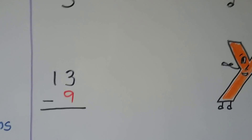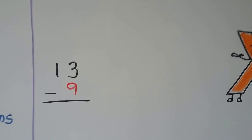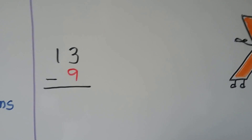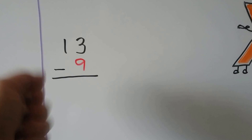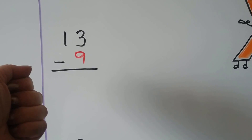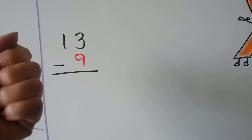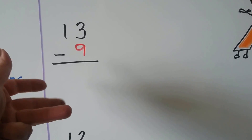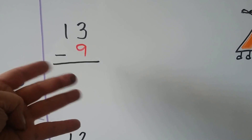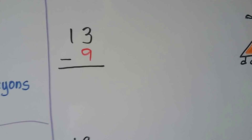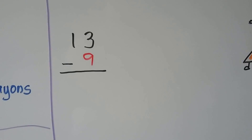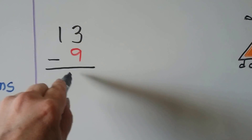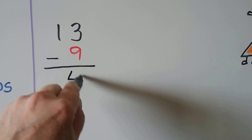13 minus 9. We can start with the 9 and count up to the 13: 9, 10, 11, 12, 13. That's 4. So 13 minus 9 is equal to 4.